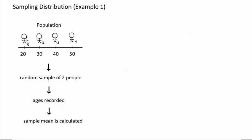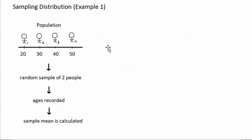If the person gets person 1 and person 3, the sample mean will be 30, because the sample will have a 20-year-old and a 40-year-old. If the person gets person 3 and person 4, the sample mean will be 45, because the sample will have a 40-year-old and a 50-year-old. Overall, there are different combinations of two people that could be selected, and each combination has its own sample mean. Since each combination has its own sample mean, we can think of those sample means as having a distribution of their own.